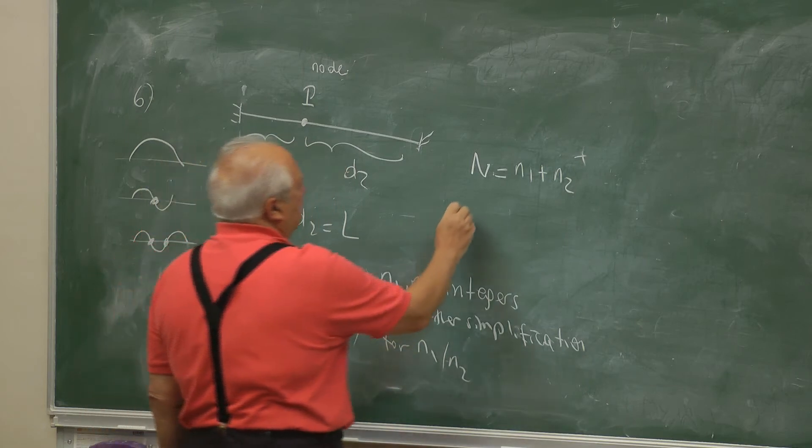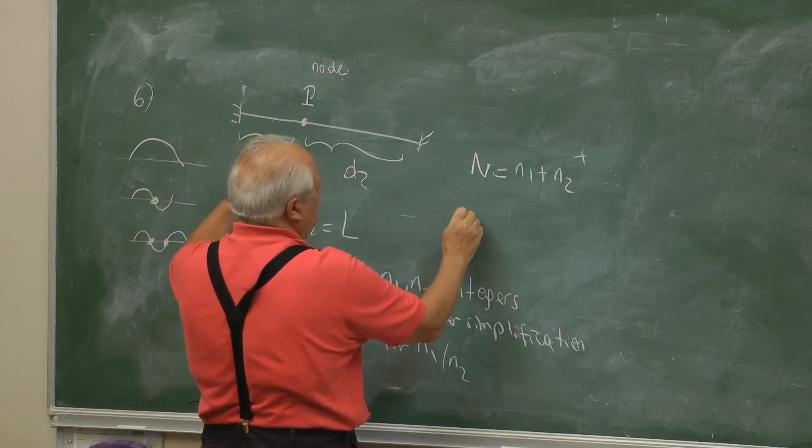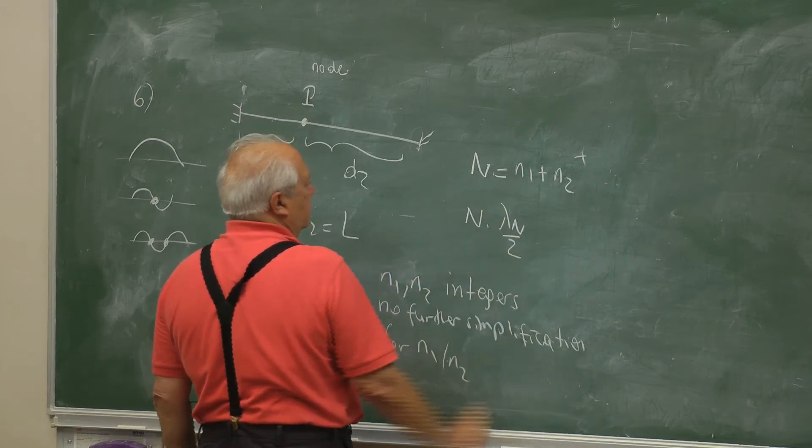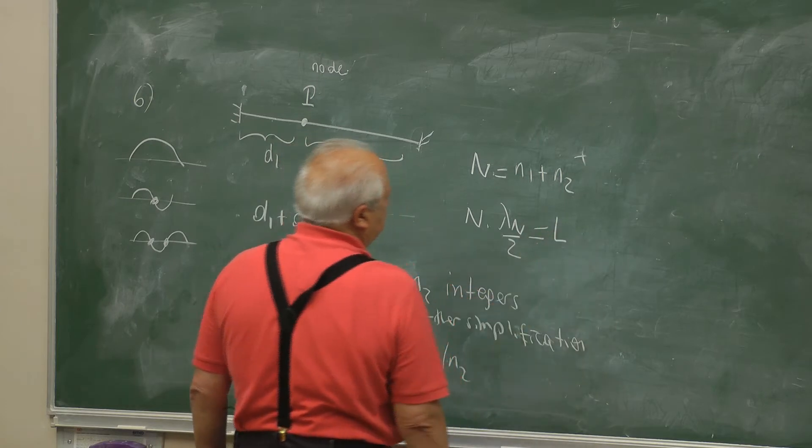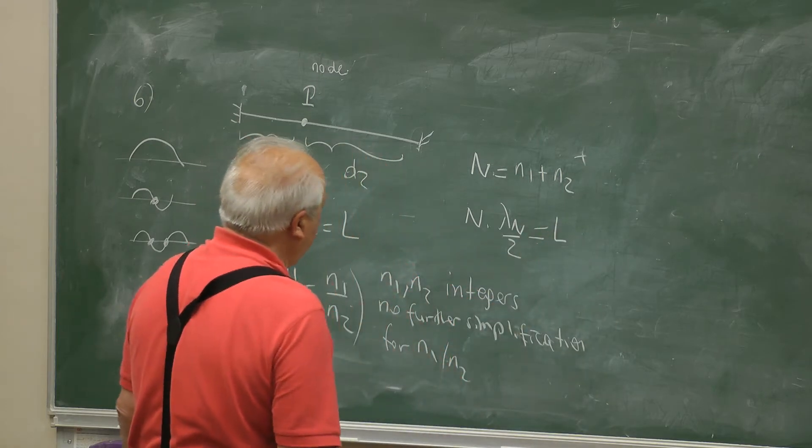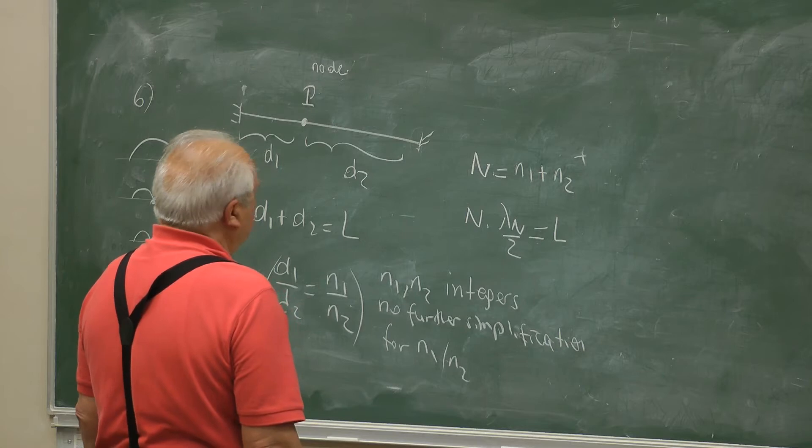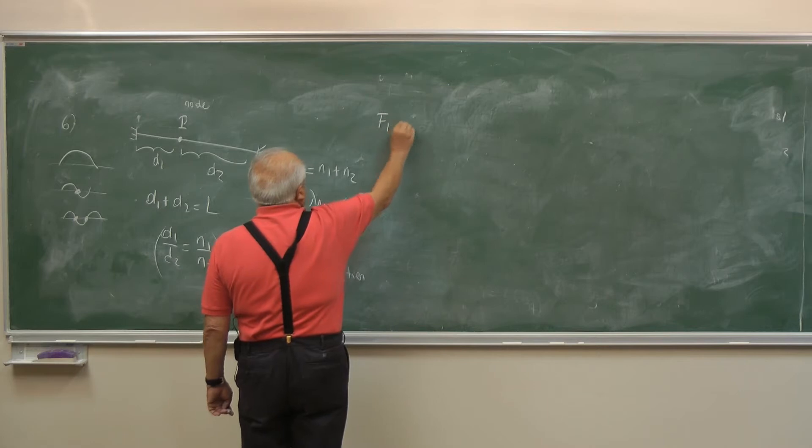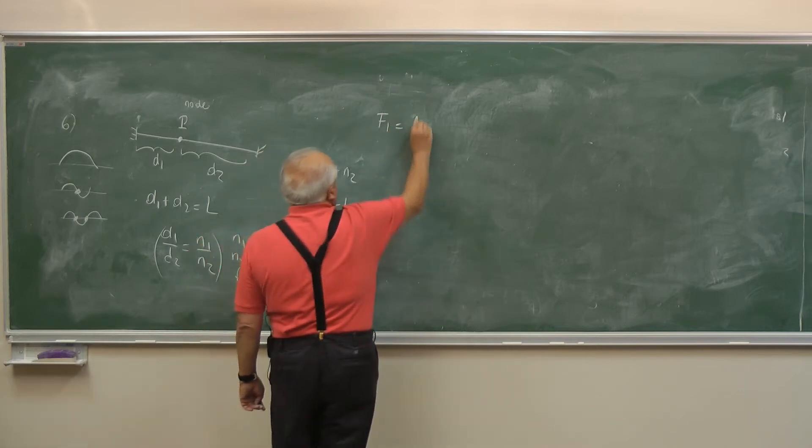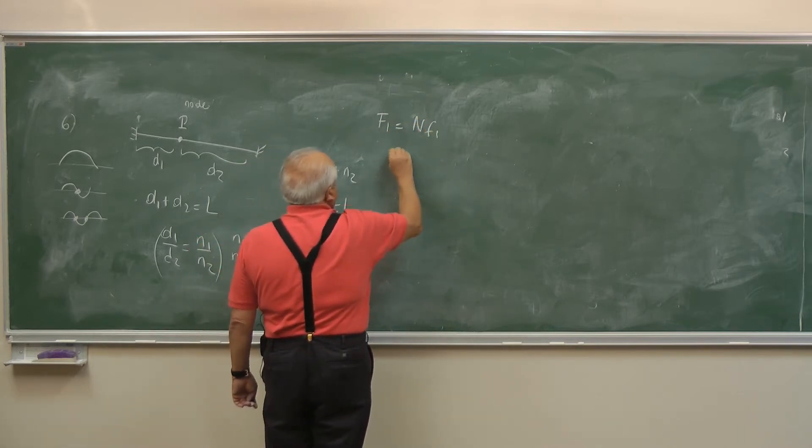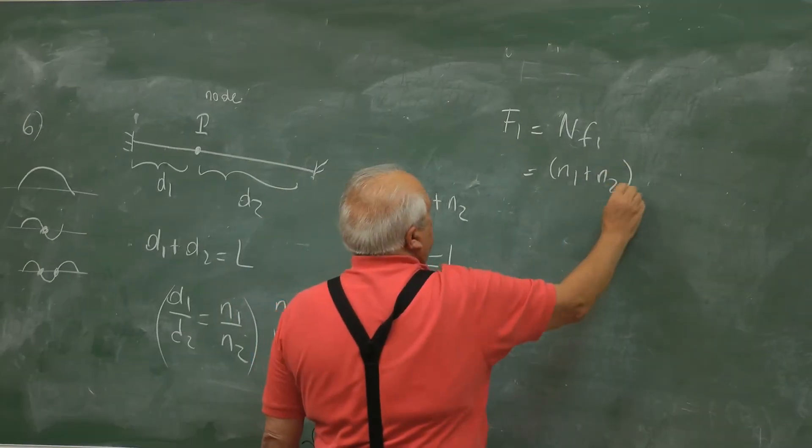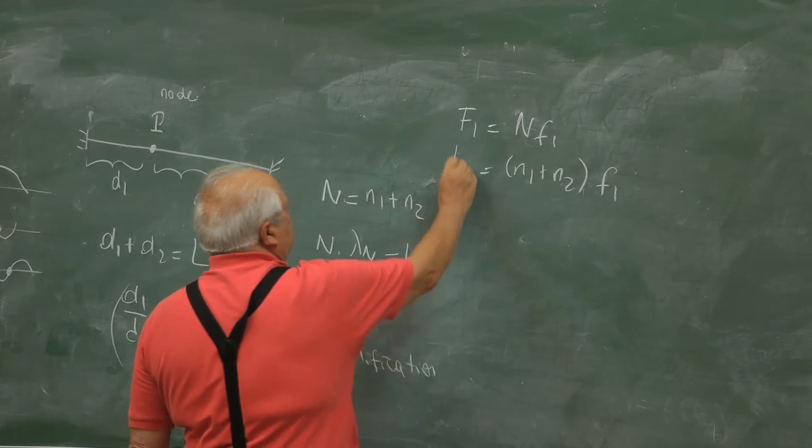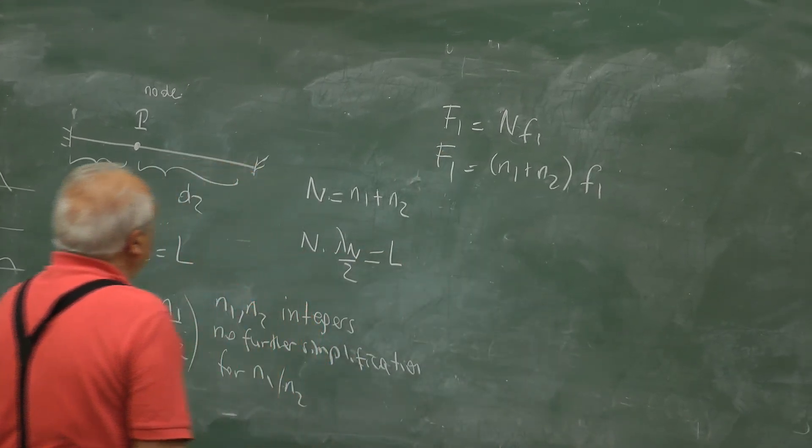Then, let n be n1 plus n2. And you can fit here n lambda n over 2. So the frequency, the lowest frequency will be n times the fundamental, n1 plus n2 times f1.